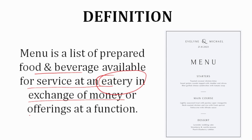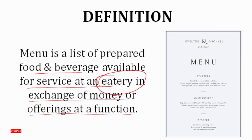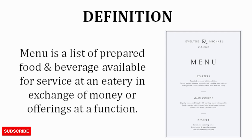There is another type of menu which might not have prices — these are the function menus. If you have been invited for a function such as a wedding, corporate function, or product launch, you are not going to get a priced menu. You will get a menu without prices, which is basically a list of items available at that particular function. So the complete definition is: menu is a list of prepared food and beverage available for service at an eatery in exchange of money, or offerings at a function.